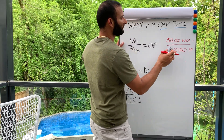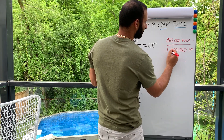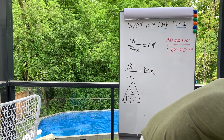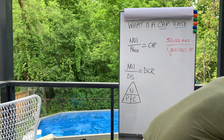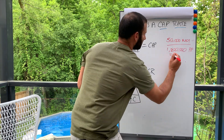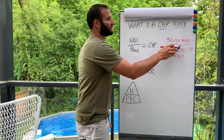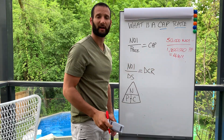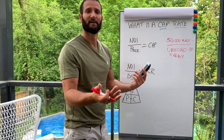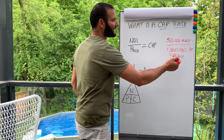For example, if I bought this building at eight hundred thousand and now I'm selling it for one point two million: fifty thousand divided by 1.2 million equals 4.16 percent. So I bought it at a 6.25% cap rate and sold it at a 4.16% cap rate. That's how people use cap rates to determine value and income.